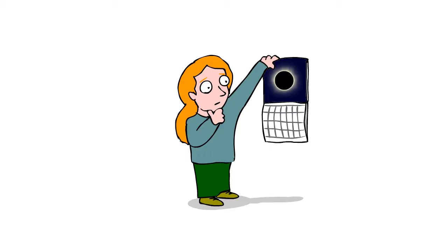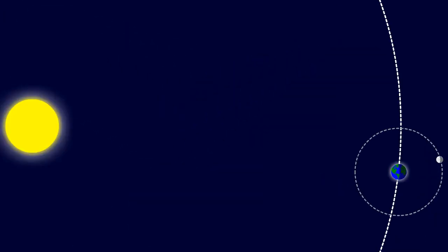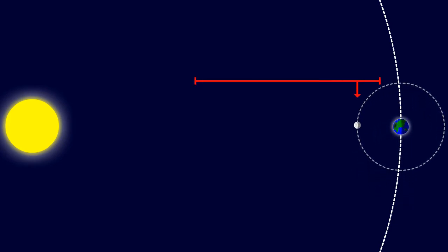You can predict when a solar eclipse will happen by knowing where the Sun is relative to the Earth, where the Moon is relative to the Earth, and where the Moon is relative between the two. A solar eclipse happens when the Moon is directly in between the Earth and the Sun. This causes the Moon to cast a shadow onto the Earth, creating a spectacle like no other.